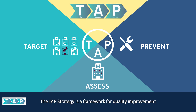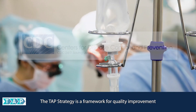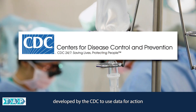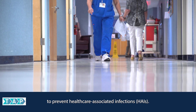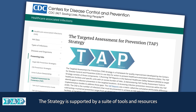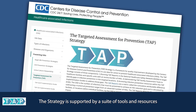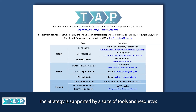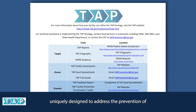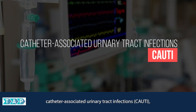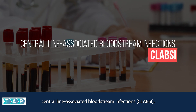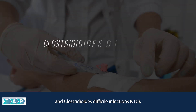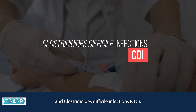The TAP strategy is a framework for quality improvement developed by the CDC to use data for action to prevent healthcare-associated infections, or HAIs. The strategy is supported by a suite of tools and resources uniquely designed to address the prevention of catheter-associated urinary tract infections (CAUTI), central line-associated bloodstream infections (CLABSI), and Clostridioides difficile infections (CDI).